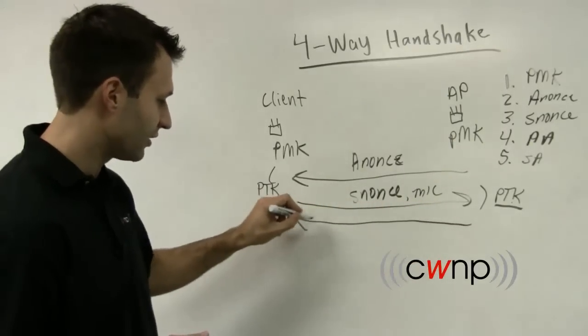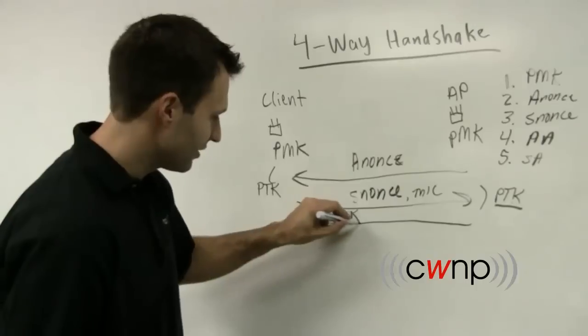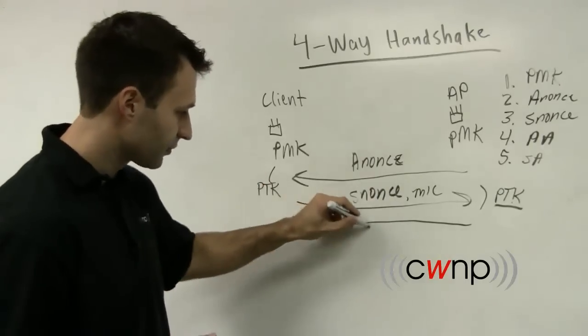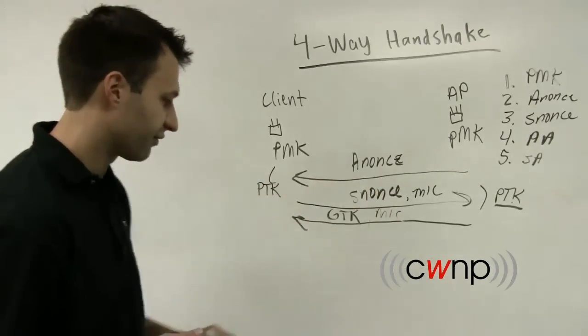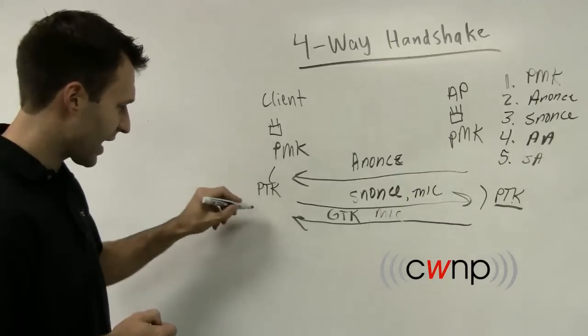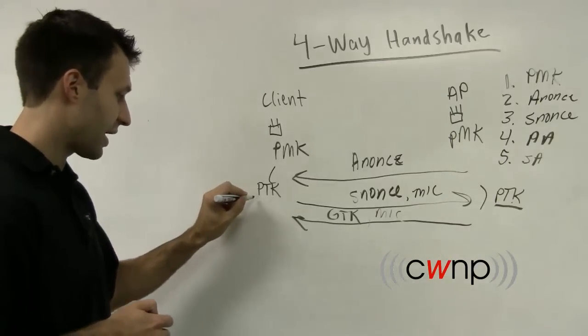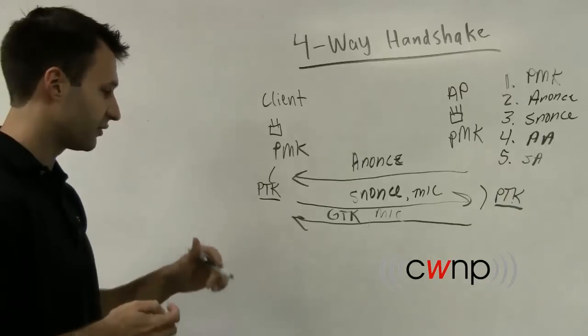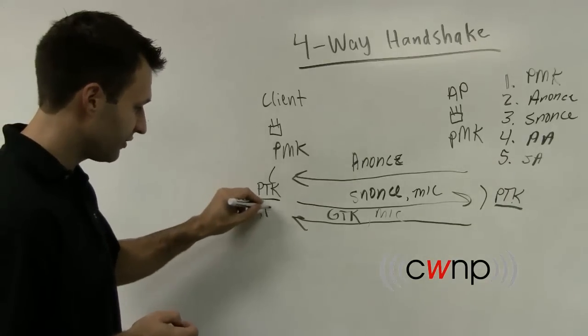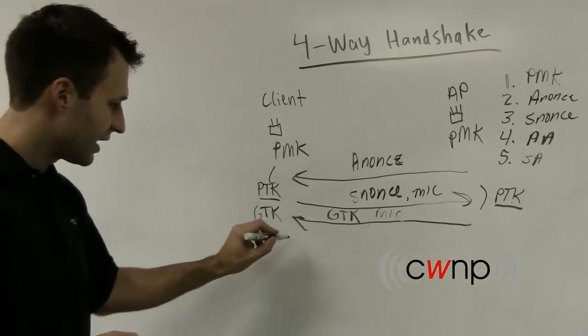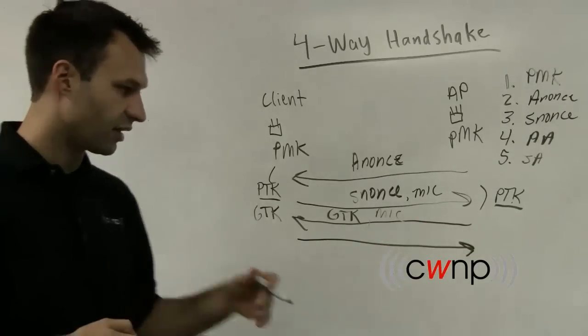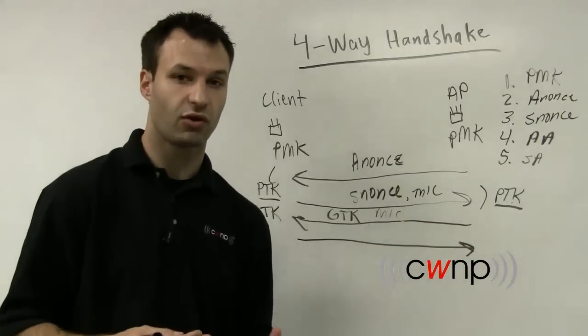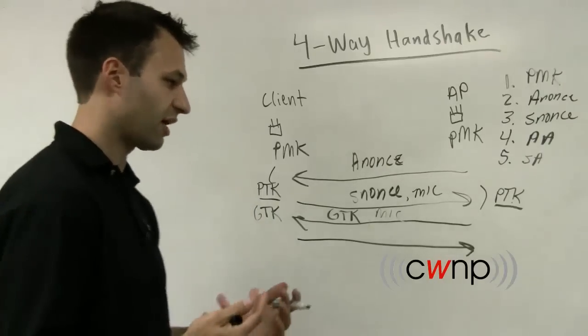The access point is going to send the GTK in this message to the client, and it's also going to MIC protect that frame. So now the client has already installed or received and installed the PTK. It's received and can now install the GTK. And then just as sort of a courtesy, it's going to respond and say, OK, I've got both those frames. I've installed them. I'm ready for encrypted data traffic.